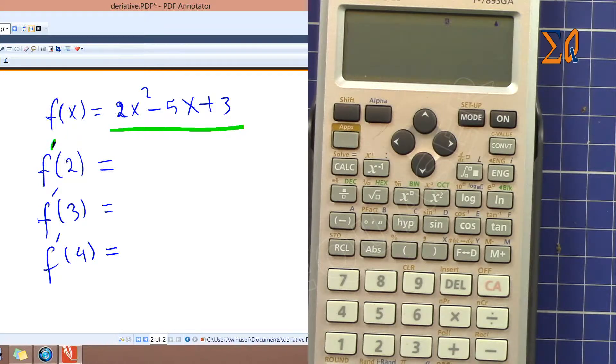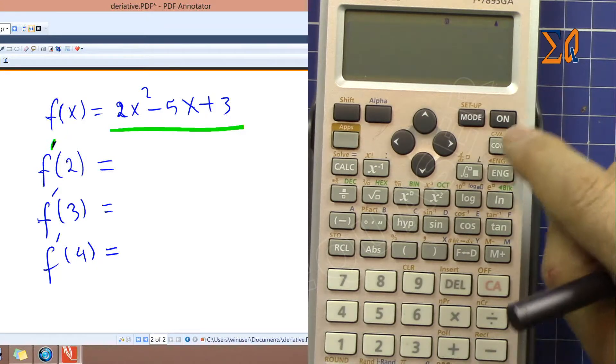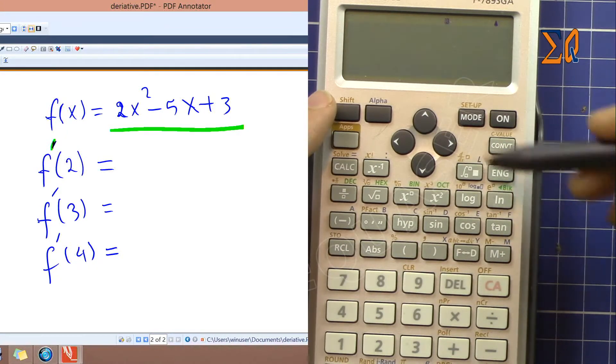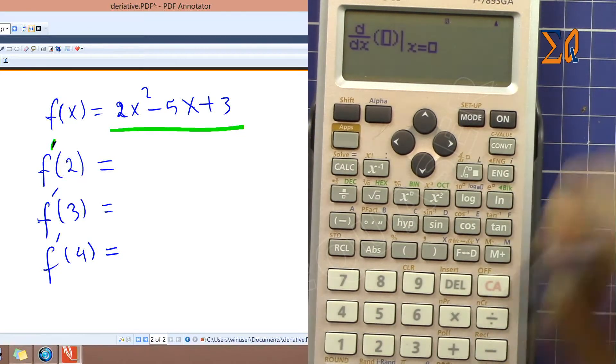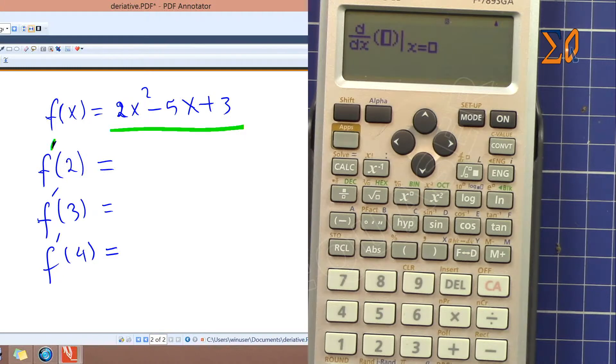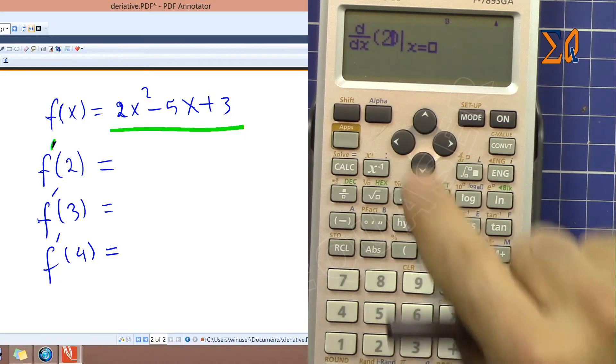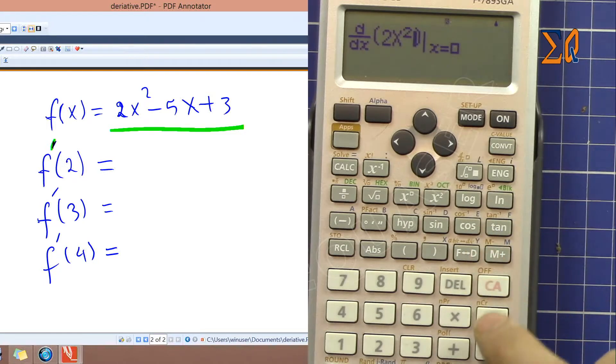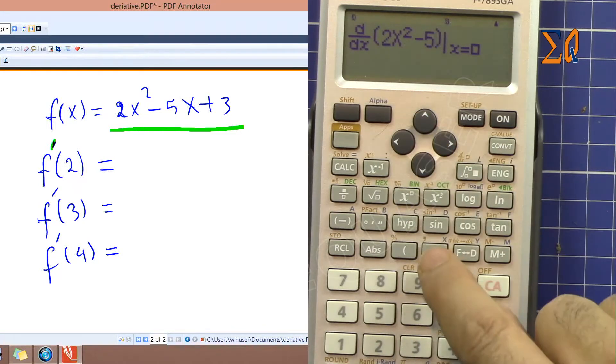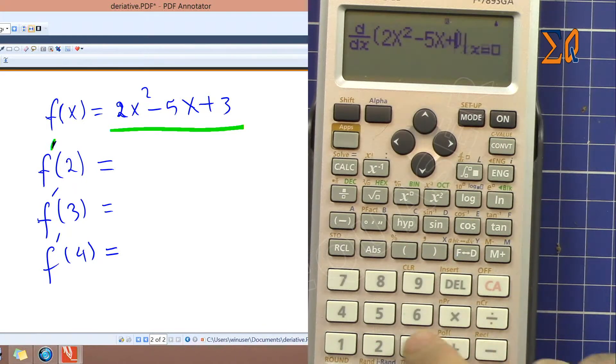Press shift and then this is the derivative. Now enter our function: 2x squared minus 5x. So 2 and then alpha X squared minus 5, and then alpha X plus 3. Then with the arrow go to the right.